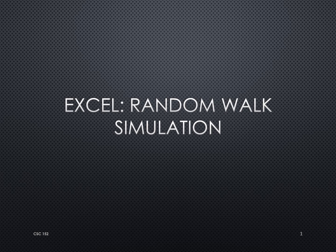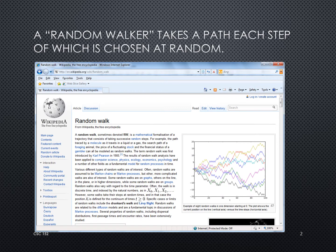In this presentation we will use Excel to make a simple random walk simulation. A random walk is a mathematical model in which a walker starts at an origin, say at zero, and then with each step takes a random step — either positive or negative. Because it's random, we tend to consider many many samples of the walker and do statistics on the set of walkers.